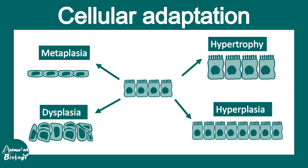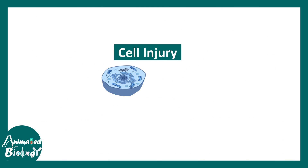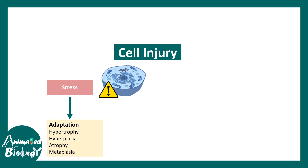But before that let's put things in context. Let's say this cell has undergone injury so it is under a lot of stress. It would try to adapt to that stress, and all these terms that we talked about are one type of adaptation which would try to revert this injury. Sometimes injury is too tough.